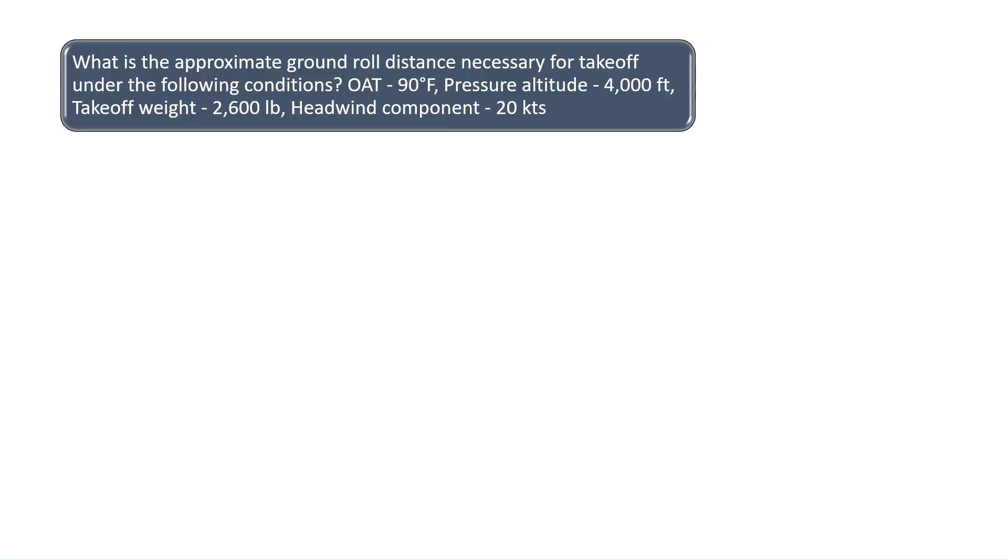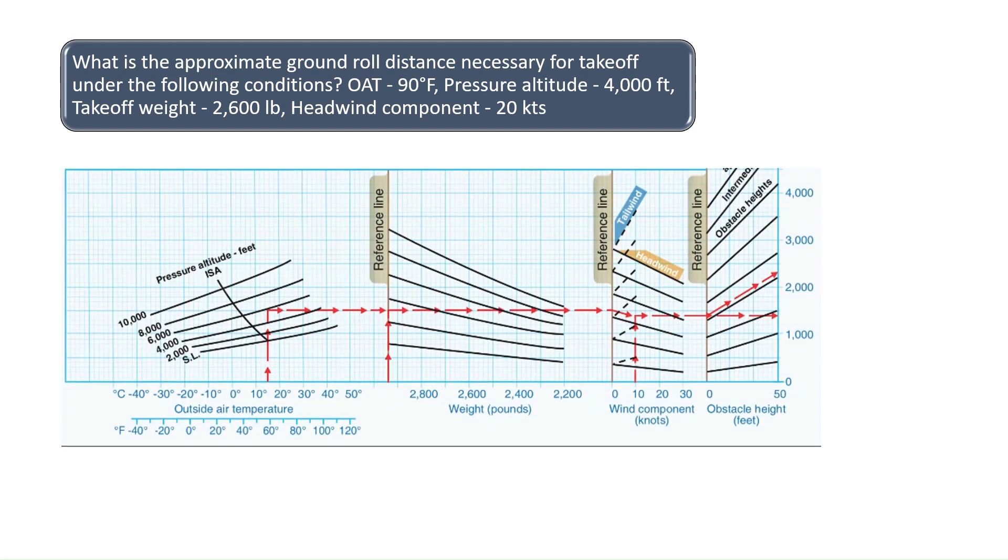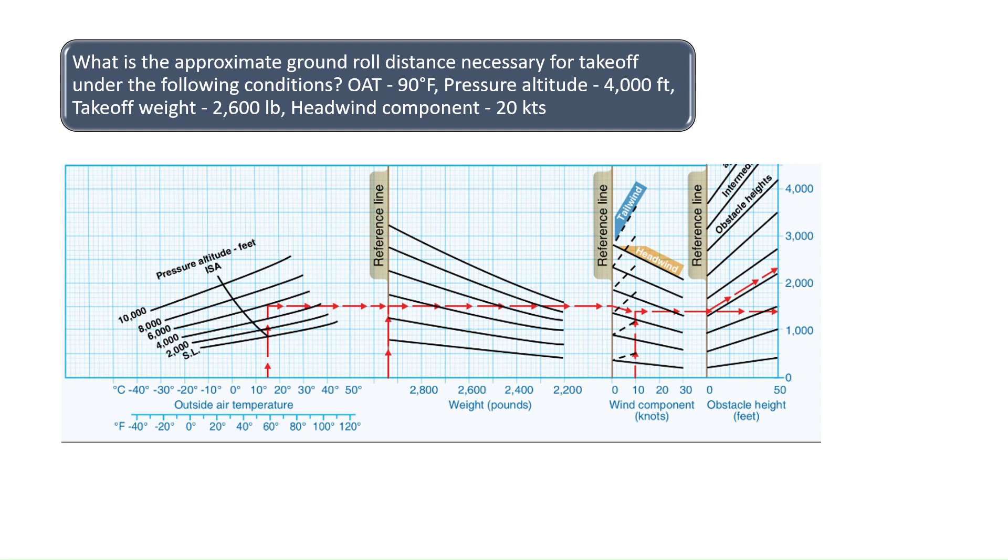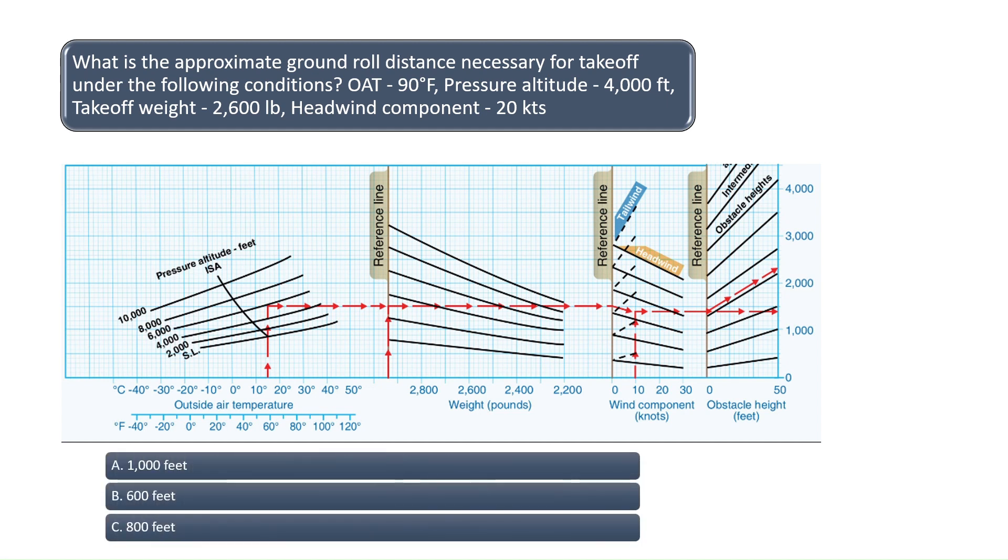What is the approximate ground roll distance necessary for takeoff under the following conditions? The outside air temperature is 90 degrees, the pressure altitude is 4,000 feet, takeoff weight is 2,600 pounds, and there are 20 knots of headwind.